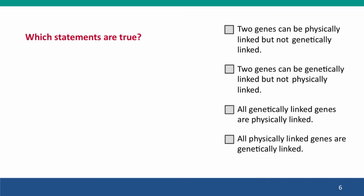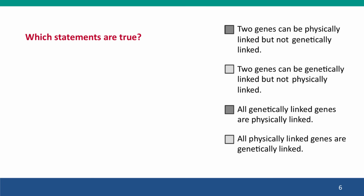Here are a couple of problems about linkage and linkage groups. Which of these statements are true? Two of them are true. First: two genes can be physically linked but not directly genetically linked — that's what you saw in the previous slide. If genes are at the ends of the chromosome, they will not appear to be directly genetically linked. But they will have physical linkage and indirect genetic linkage. Second: all genetically linked genes are physically linked — so genetically linked genes are a subset of the physically linked genes on a chromosome. Most physically linked genes are also genetically linked, but not the ones at the far ends from each other.